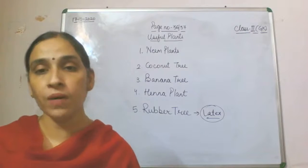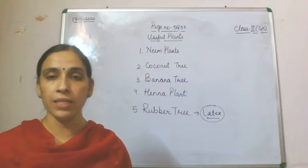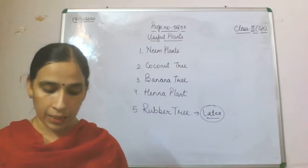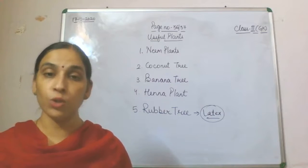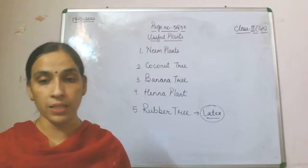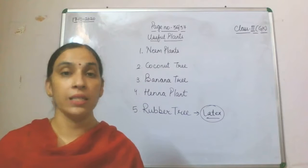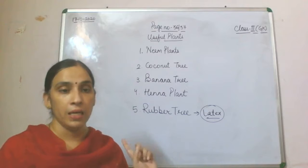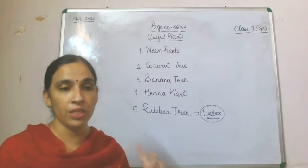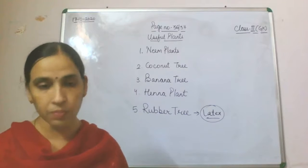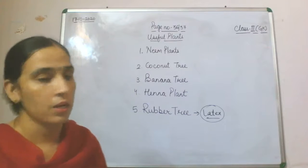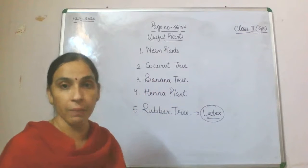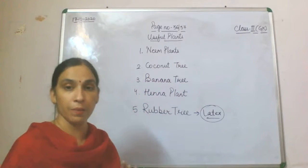So apart from these, you will find many more plants in your quick quiz. To summarize, the five useful plants we have covered are: neem tree, coconut tree, banana tree, hena plant, and rubber tree.